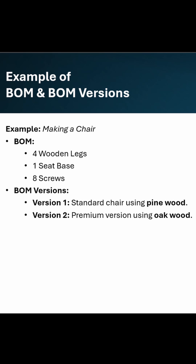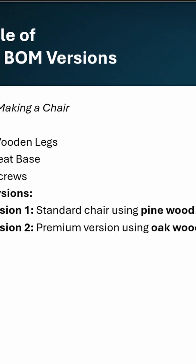Let's understand BOM and BOM version with one example. Let's say in making a chair, we need three raw materials: one is wooden legs, one is a seat base, and the third is screws to join the whole chair. The quantity needed is four wooden legs, one seat base, and eight screws to make one chair.